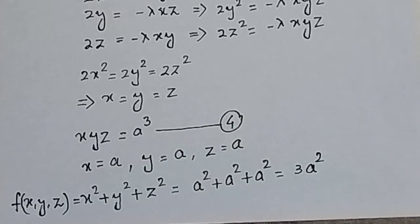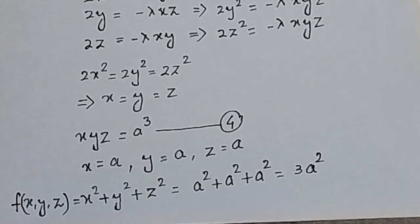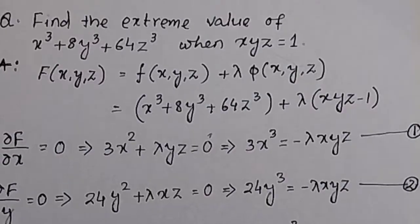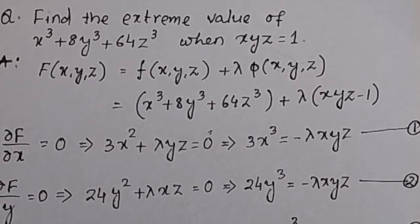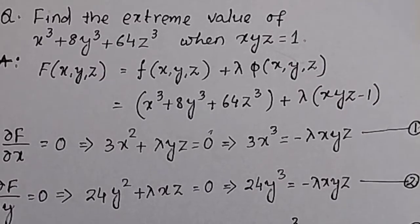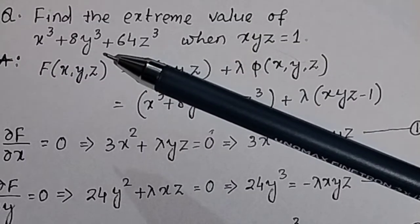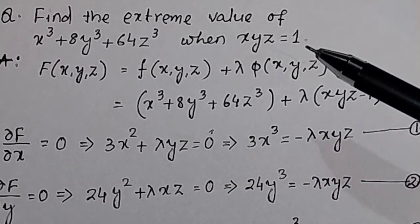In this way, by using the Lagrange multiplier, you can find the constrained minimum or maximum value of a function. In the next video, we will discuss another problem: how to find the extreme value of x² + 8y³ + 64z³ when xyz = 1.